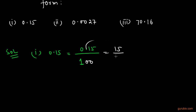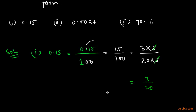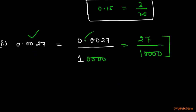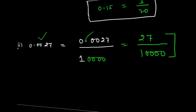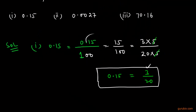So it will be 15 over 100. We can write 15 as 3 × 5, and 100 as 20 × 5. The 5 cancels, giving us 3 over 20. So 3 over 20 is the P by Q form of the number 0.15.